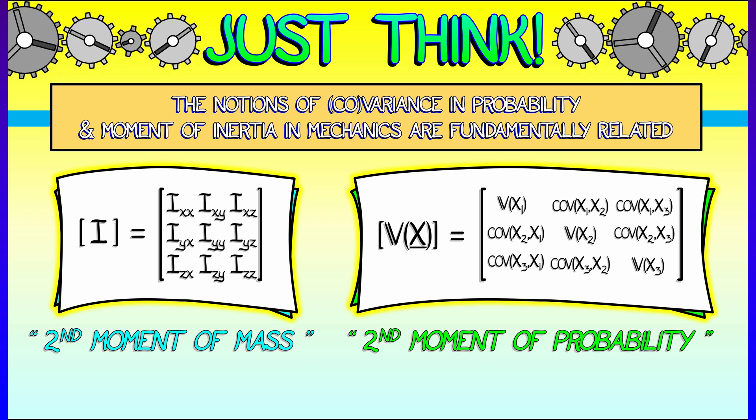Maybe there are things like third moments, fourth moments. Maybe these things are some kind of coefficients of something like a Taylor expansion for how mass or probability is distributed. Wow.